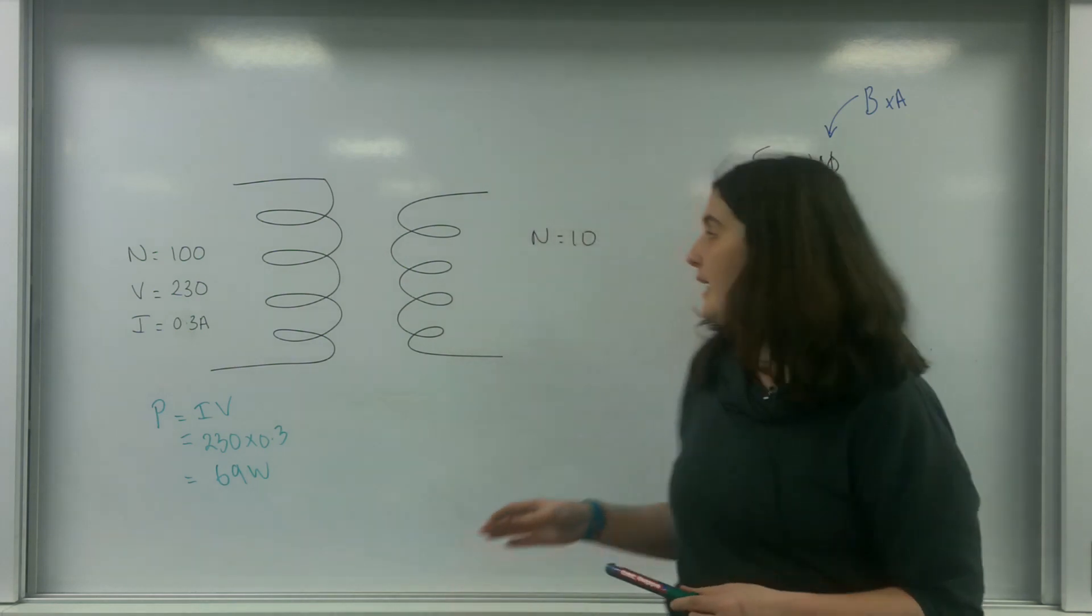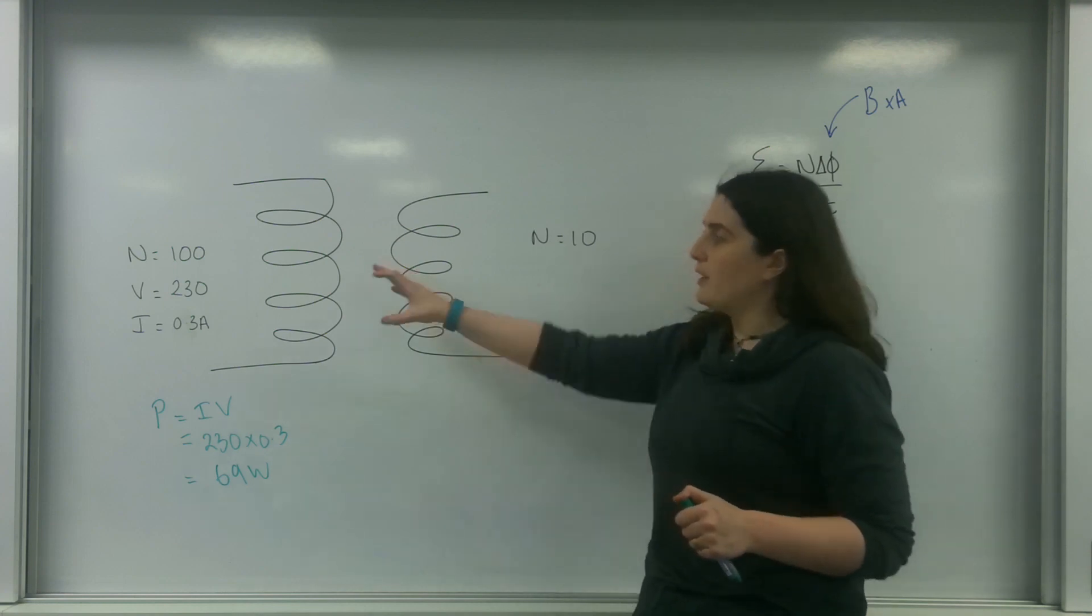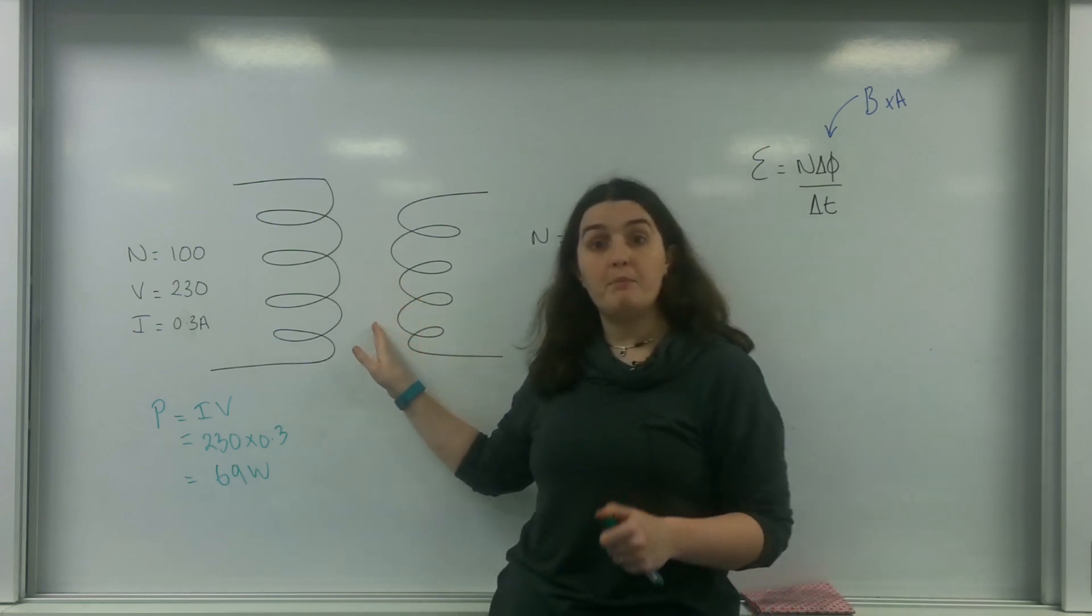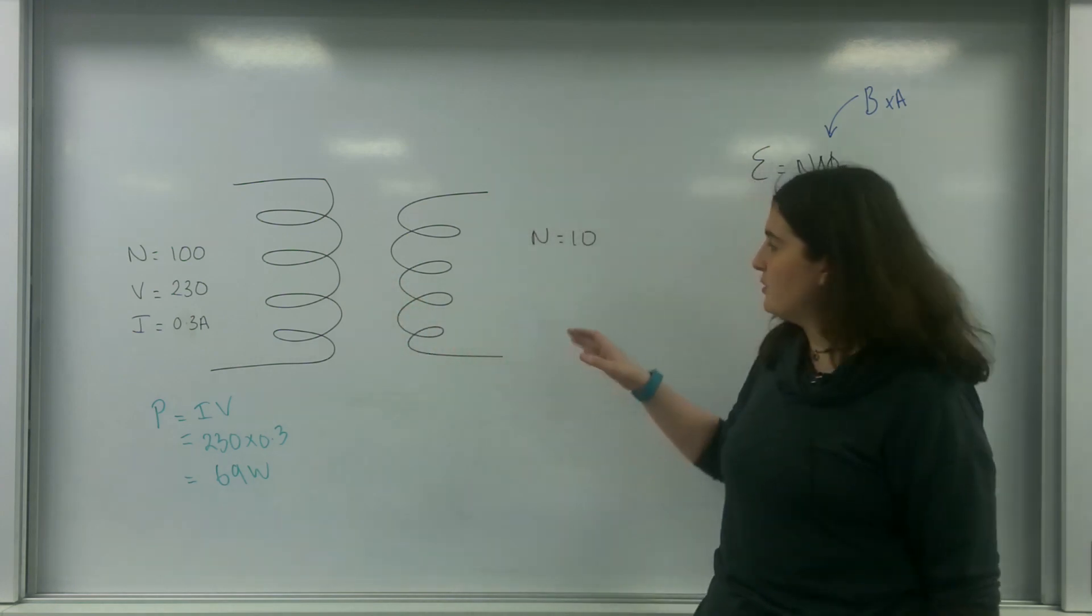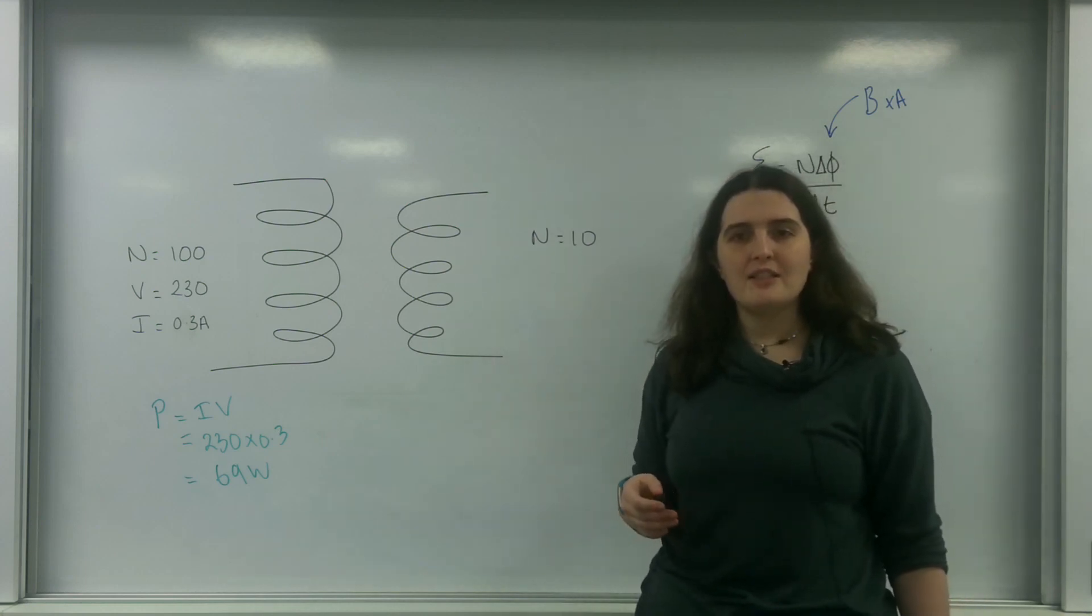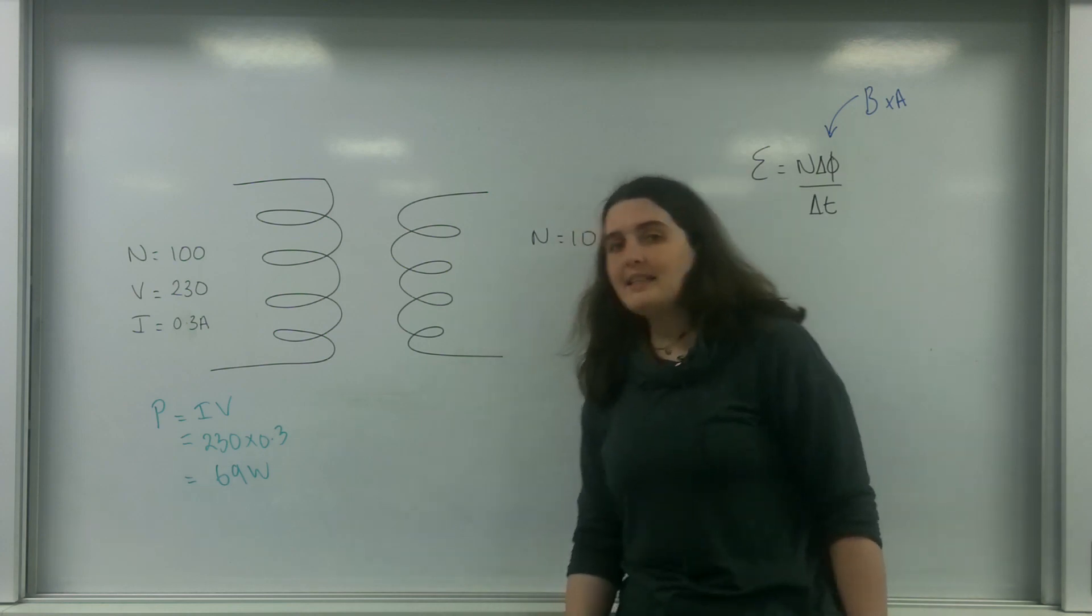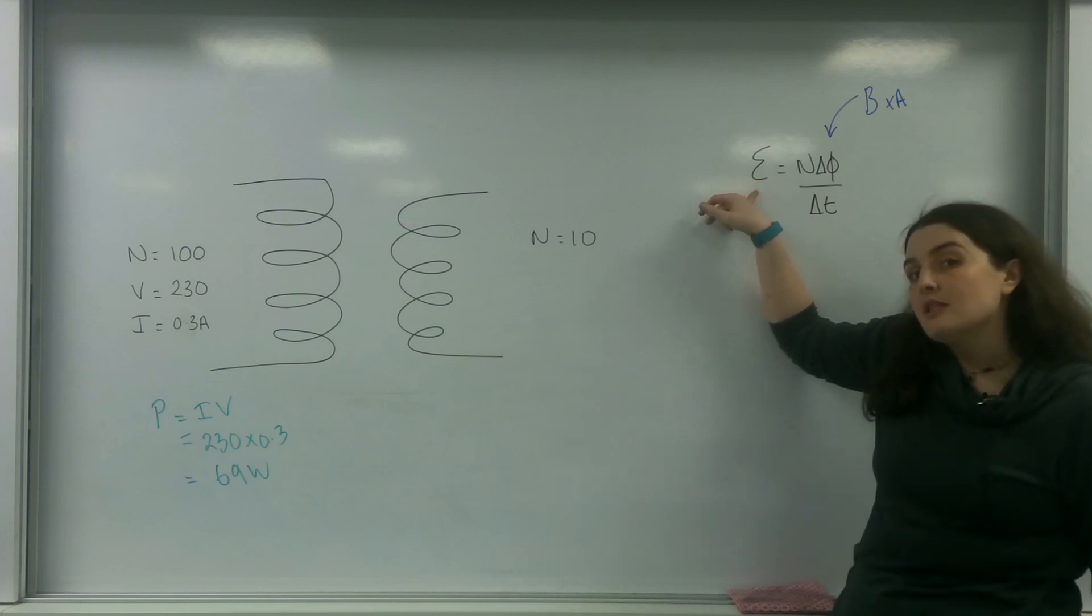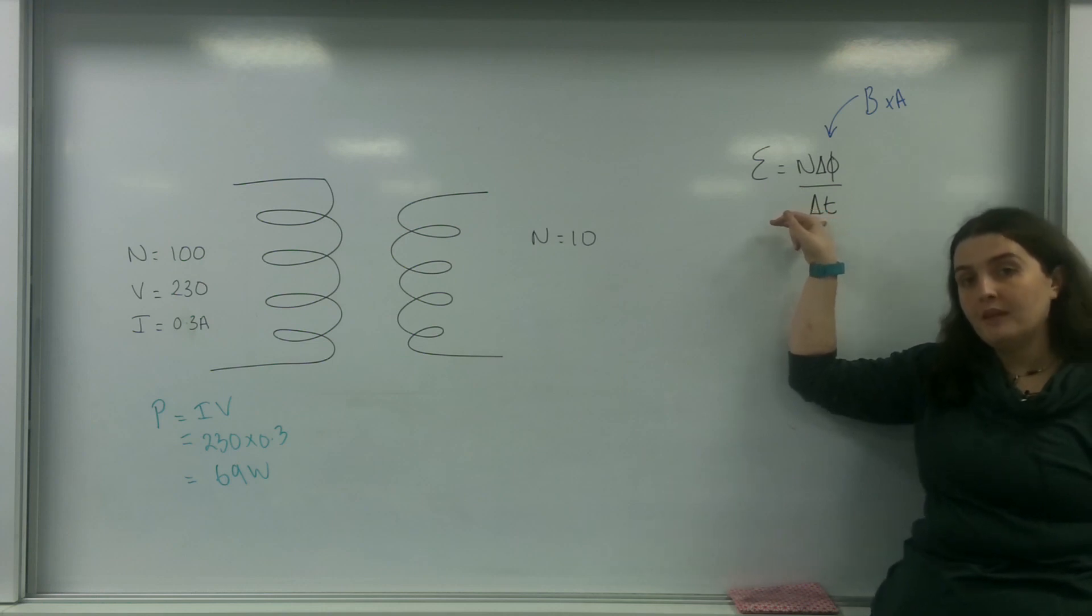Now this object here has only got 10 coils, so because it's got much less coils, it's actually going to see much less flux linkage in total. This means if you look at the formula that EMF induced is N times change in flux over time. This N is really important.